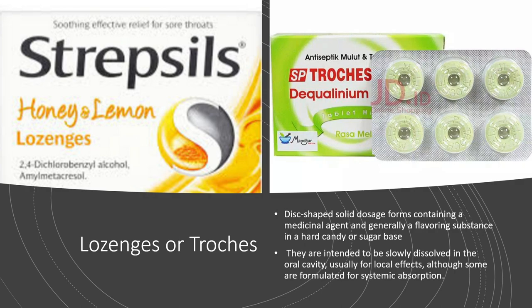Next is your lozenges and your troches. These are familiar to you — examples include Strepsils and benzalkonium chloride. These are intended to be dissolved in the mouth, primarily drugs with an agreeable taste that are used to disinfect the oral cavity or to provide relief to sore throat.